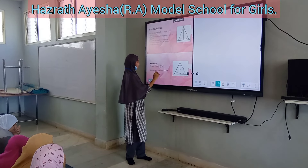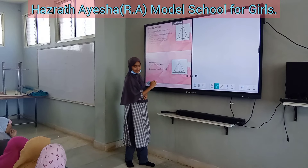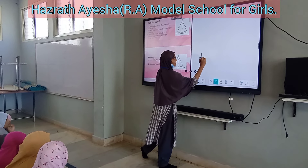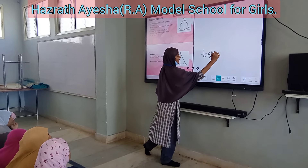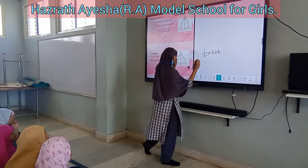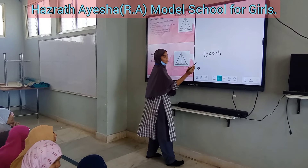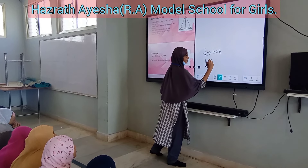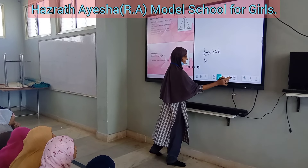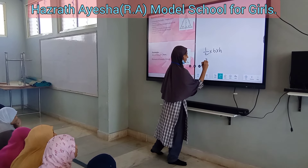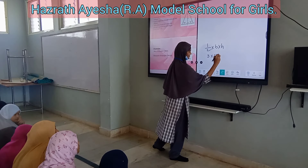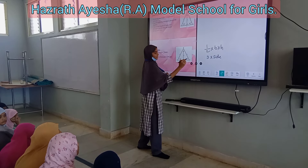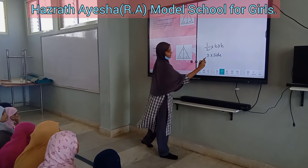Now let's see the formula. The area of a triangle is 1/2 into B into height. The perimeter of a triangle is 3 into side.